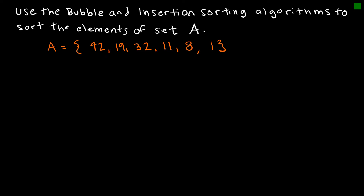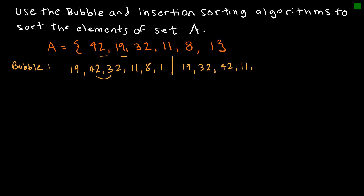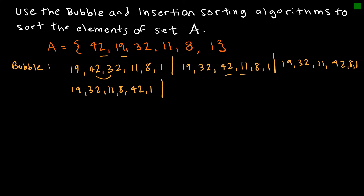Let's look at a practice example. Keep in mind we might have several passes. Starting with bubble sort, I want to sort from least to greatest. In pass one: compare 42 and 19 — not in the right order; compare 42 and 32 — not in the right order; compare 42 and 11 — not in the right order, giving 19 32 11 42 8 1. Still in pass one: compare 42 and 8 — not in the right order, giving 19 32 11 8 42 1. Then 42 and 1 — not in the right order, giving 19 32 11 8 1 42.